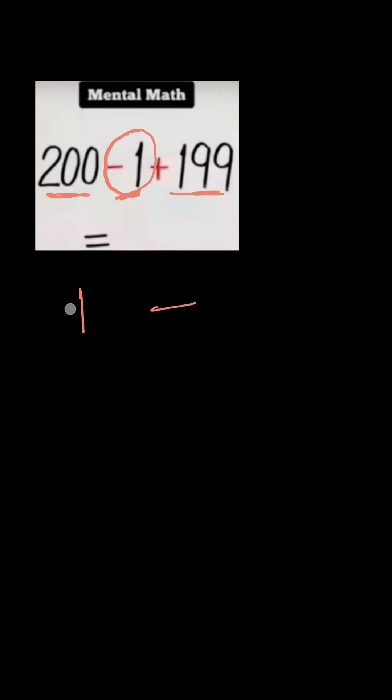Following the order of operations, we have 200 minus 1 plus 199. I'm going to deal with these two first. So it's going to give me 199 plus 199, and that will give me 398.